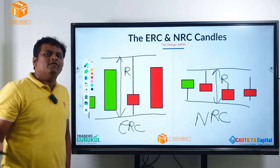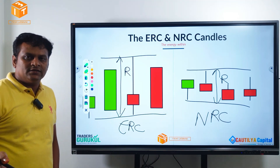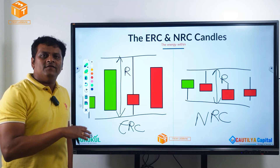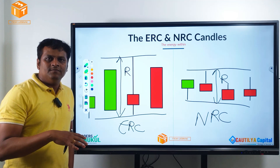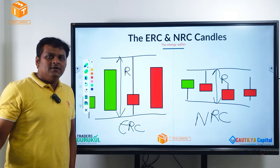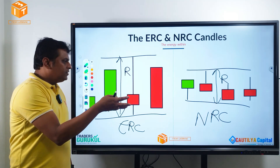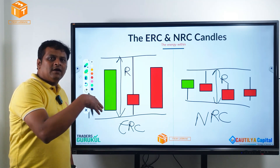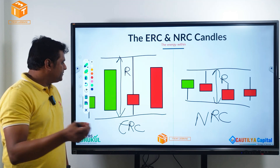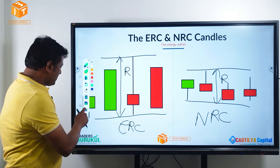There are only two more flavors to candlesticks. You have one flavor — momentum and base — and you have another flavor — ERC and NRC.